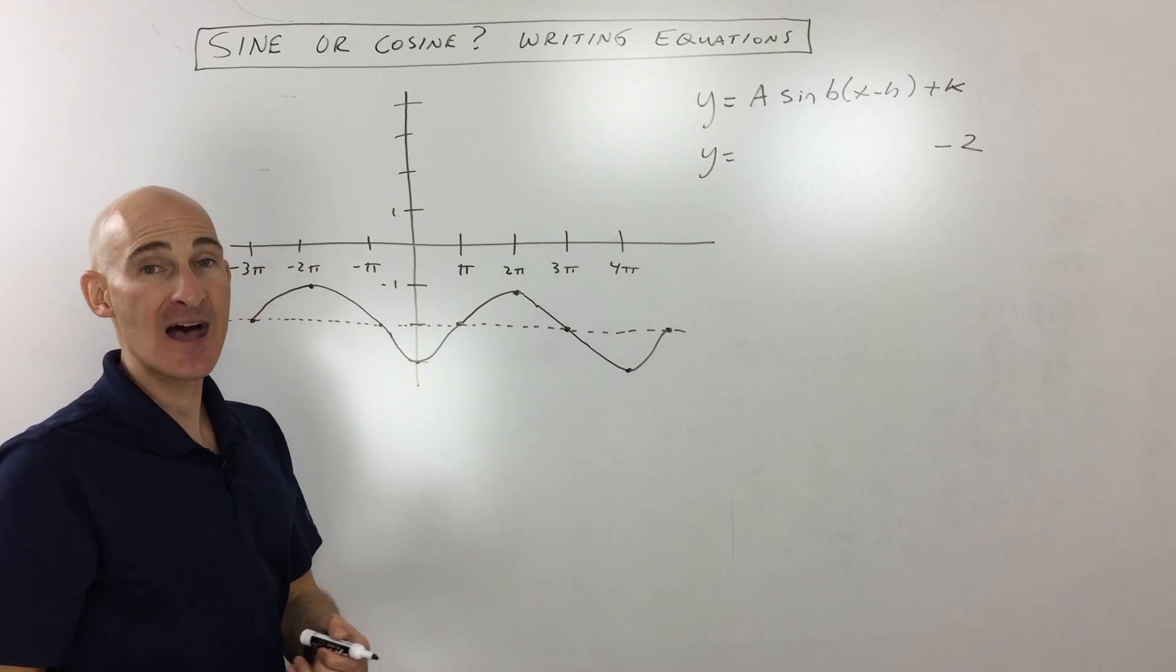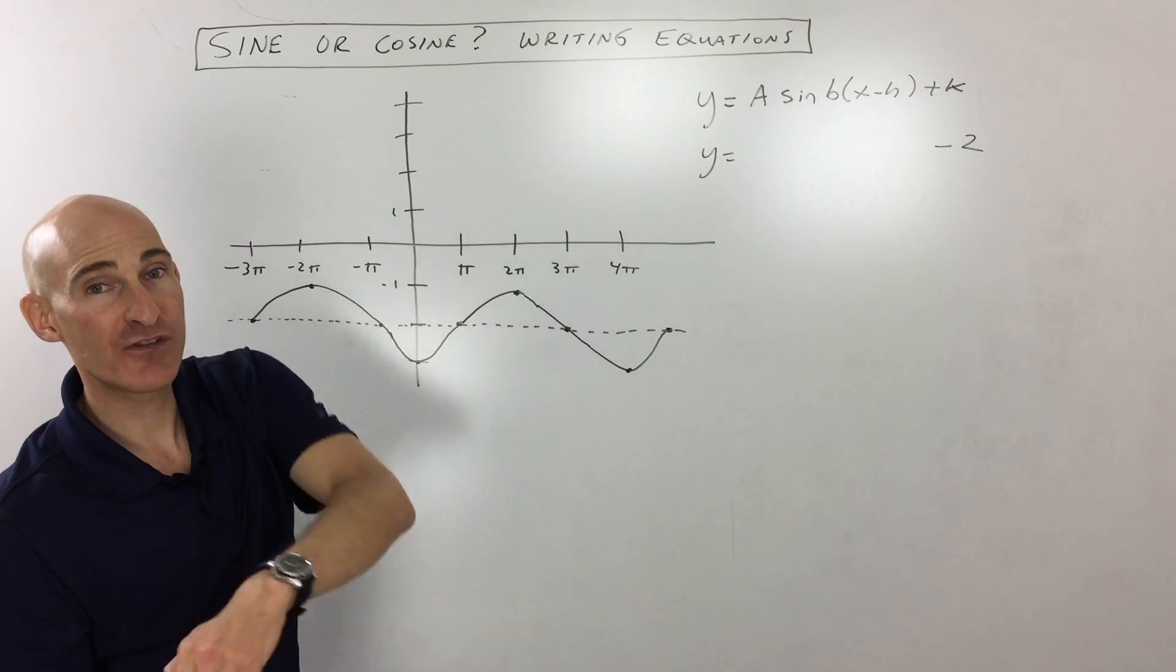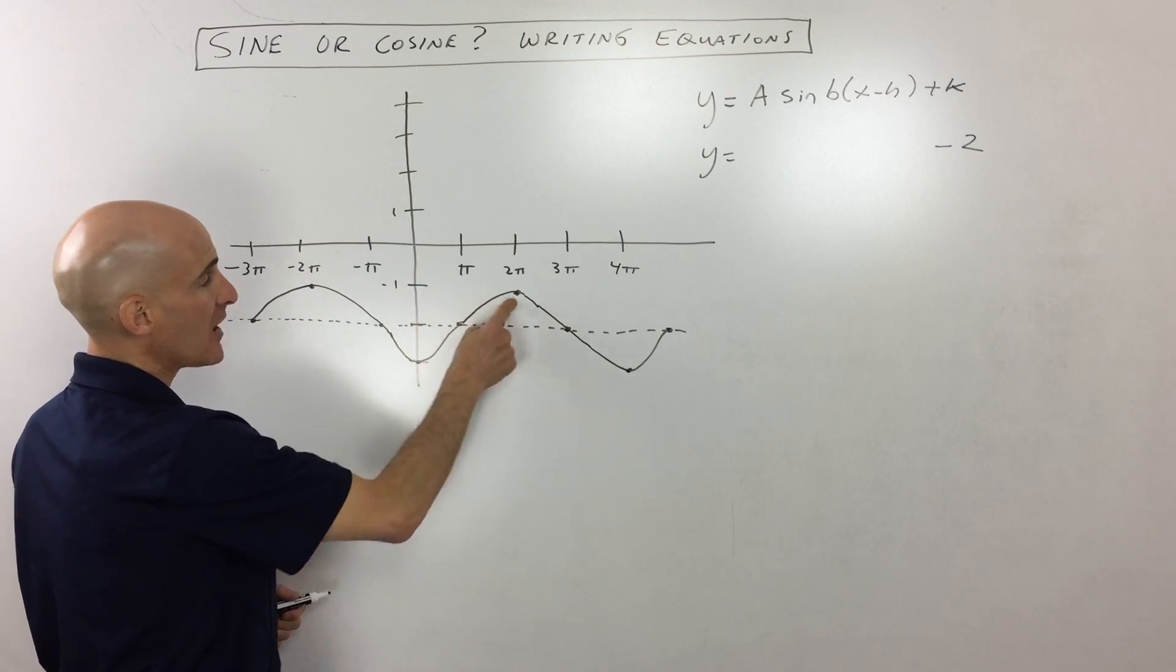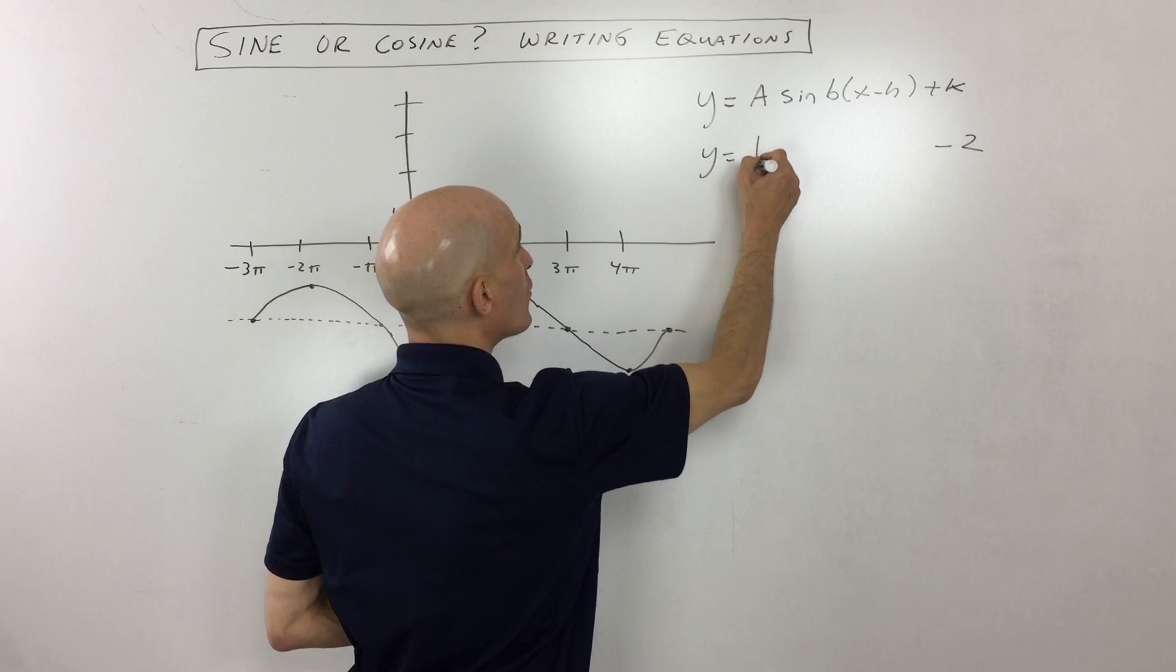So the amplitude itself is always positive. If it's negative, what that means is it's reflecting it over the x-axis. So you can see this amplitude here is just a height of one. So we know our A value is one.